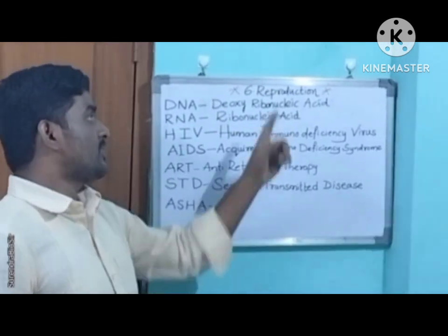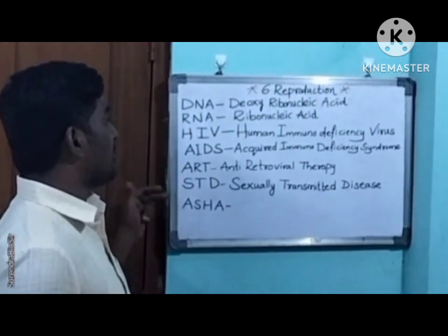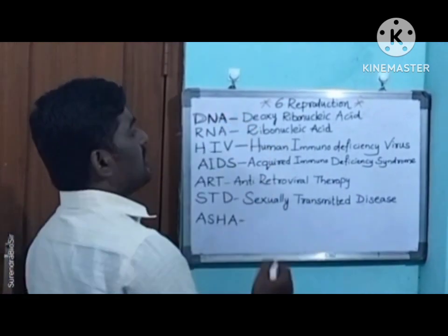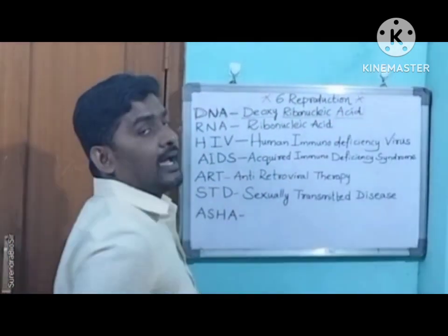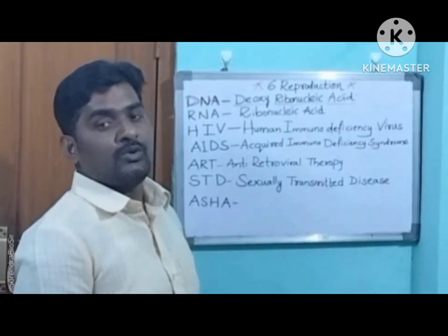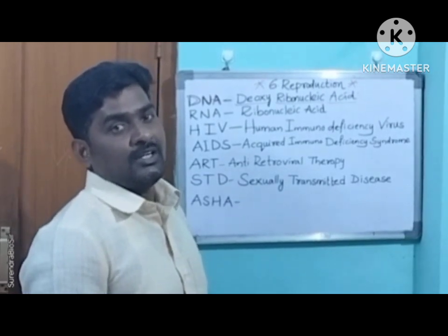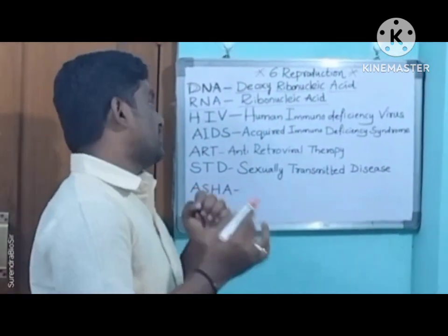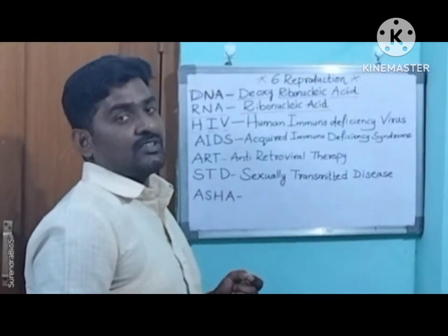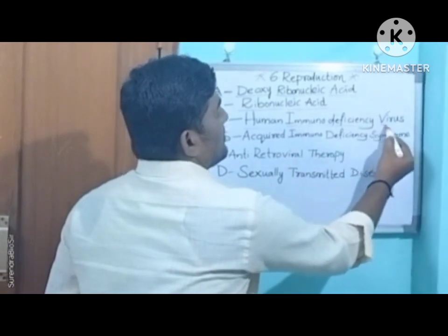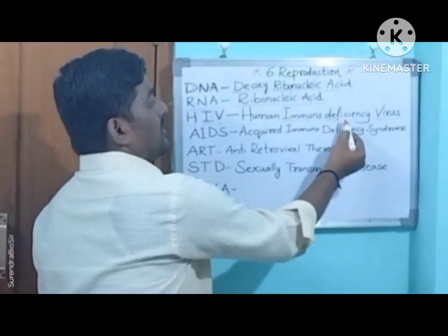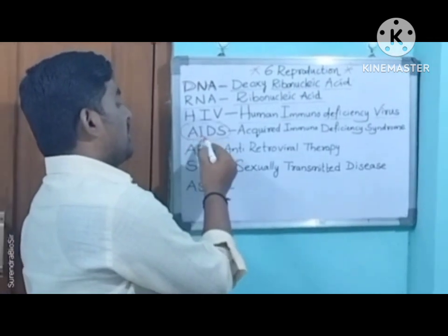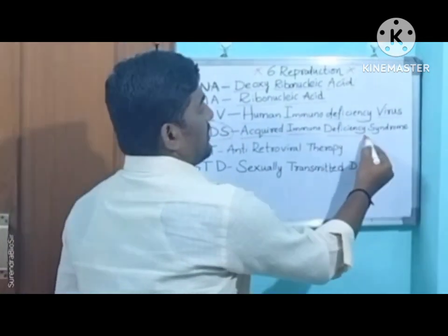In the next chapter, Reproduction, there are seven abbreviations. First: DNA — Deoxyribonucleic Acid, discovered by Watson and Crick. Next: RNA — Ribonucleic Acid. Next: HIV — Human Immunodeficiency Virus, which causes AIDS — Acquired Immunodeficiency Syndrome.